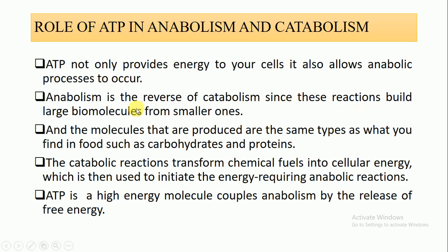Anabolism is the reverse of catabolism since these reactions build up large molecules from smaller ones. The molecules produced are the same types found in food, such as carbohydrates and proteins. In a normal balanced diet, we continuously utilize different types of molecules — carbohydrates, proteins, lipids, macronutrients, micronutrients — which are built up and then broken down and converted into different biomolecules. ATP is a high-energy molecule which couples anabolism by the release of free energy.